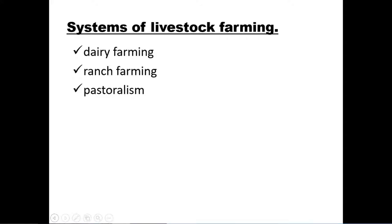One of the systems used is that of dairy farming. Can you spell this word dairy? It is D-A-I-R-Y. Dairy farming. Then we have what we call ranch farming — we can call it ranch farming or ranching. Then we have what we call pastoralism. Can you spell this word? P-A-S-T-O-R-A-L-I-S-M. Pastoralism. So we are going to look at these systems of livestock farming one by one.